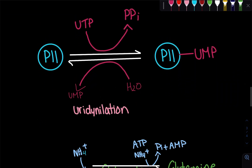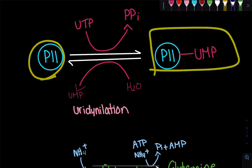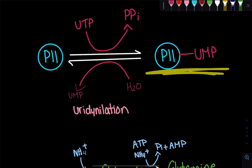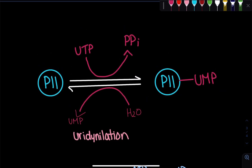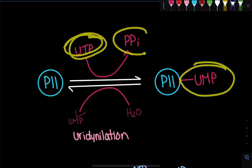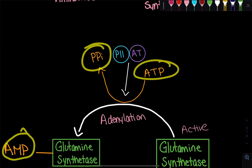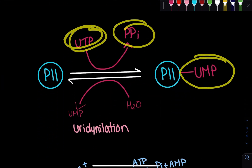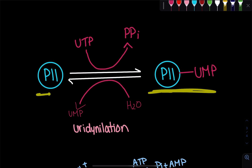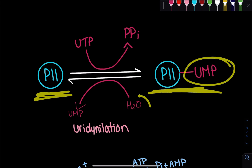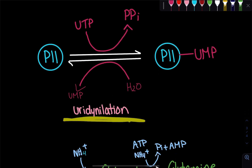P2 can either exist on its own or as uridylylated P2. This uridylylation is similar to the adenylation we saw of glutamine synthetase. We have UTP; the UMP binds to P2 and pyrophosphate is lost — similar to how ATP provides AMP with pyrophosphate lost. If we want to go from uridylylated P2 back to plain P2, we simply remove the UMP, using water in this case.